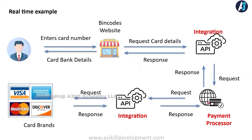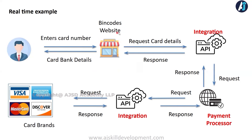The card brand knows which bank and account number is associated with that card, so it sends those details as a response back to the payment processor, which sends it back to BinCode. BinCode simply displays that information in the user interface. So BinCode doesn't have any data — the data is spread across different applications. Integration is happening in two places: BinCode to the payment gateway, and the payment gateway to the card brand service. This is how John is able to see his customers' associated bank information in this website.